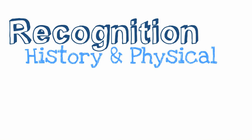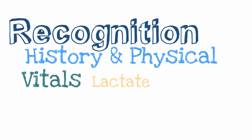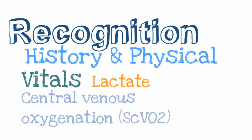How do we recognize sepsis early? History and physical — that's the answer in every question in medicine. Do a thorough history and physical: when did they get sick, any known exposures, do they have any catheters? Look at their vitals — do they have hypotension, are they tachycardic, do they meet SIRS criteria? Get a lactate, which measures end-organ perfusion, as well as central venous oxygenation, ScvO2. These are two markers for end-organ perfusion and will help you identify a patient who is septic.